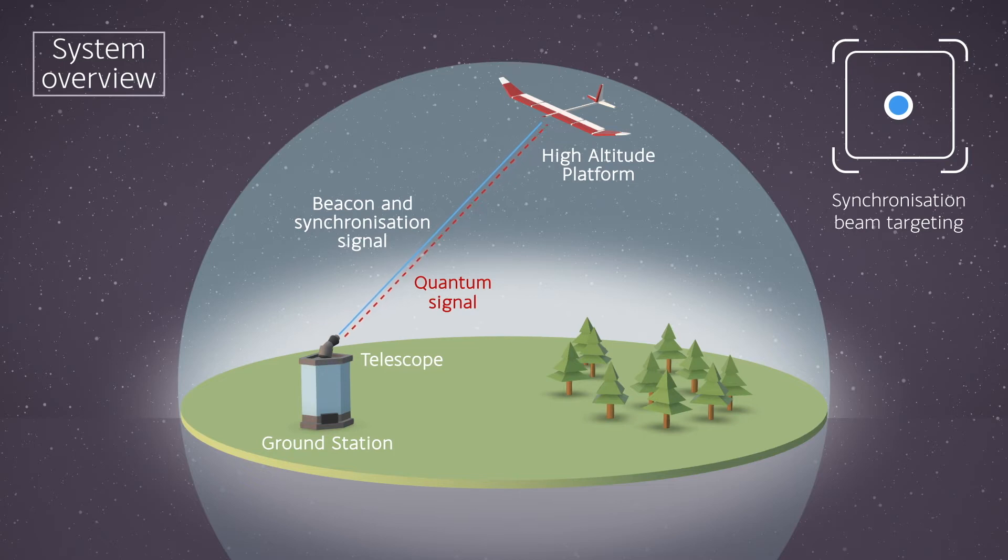The quantum transmitter module, in terms of the discrete variable protocol, is a single photon level, or actual single photon source, which is modulated in such a way that we can transmit our quantum secure key securely.